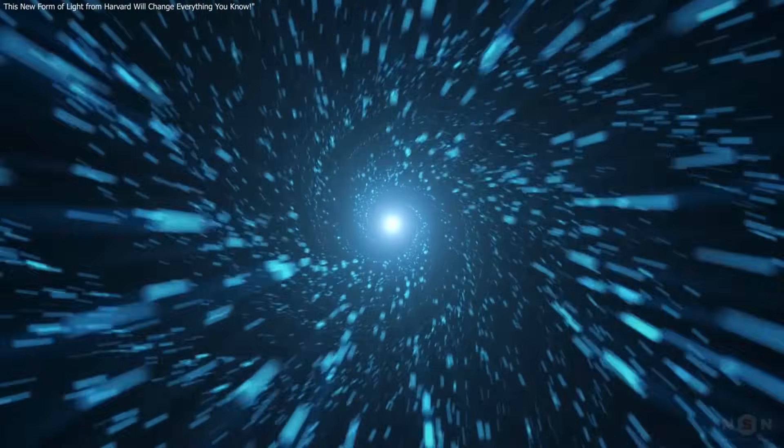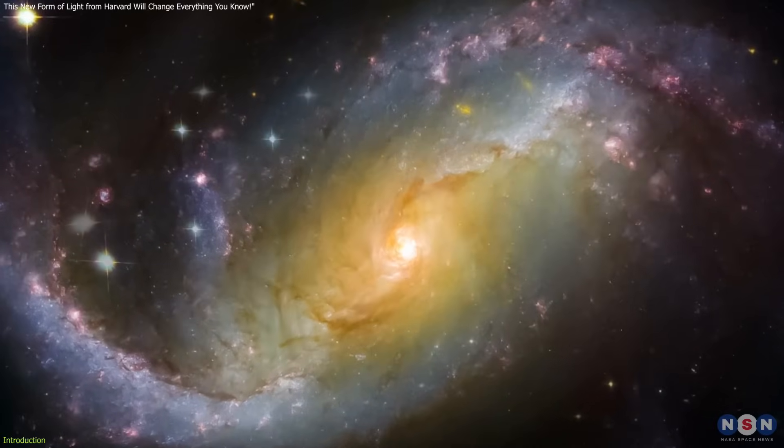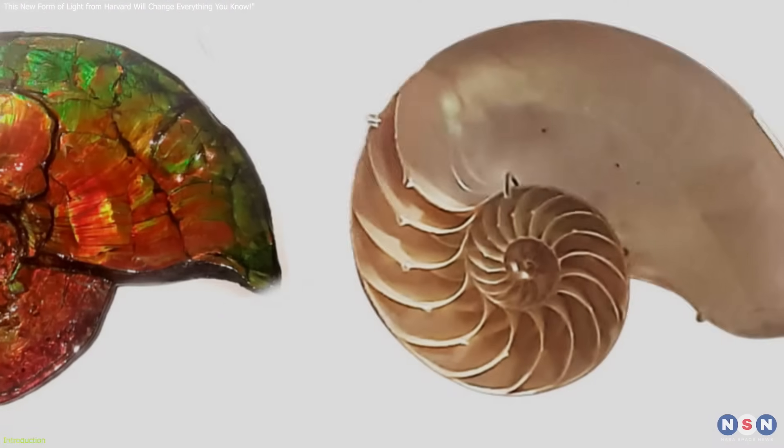What if light could do more than shine straight or spin in a spiral? What if it could twist with changing torque, mimicking nature's patterns like galaxy arms, sunflower seeds, or nautilus shells?